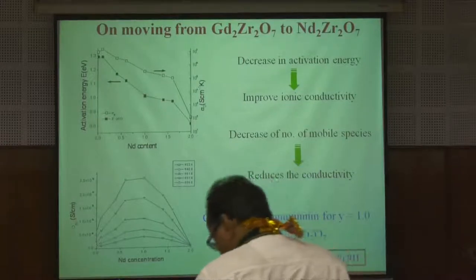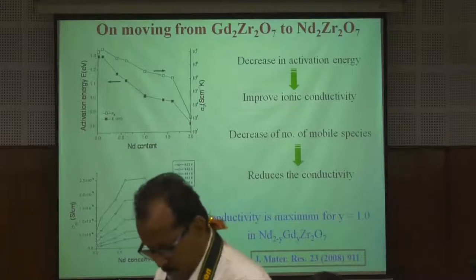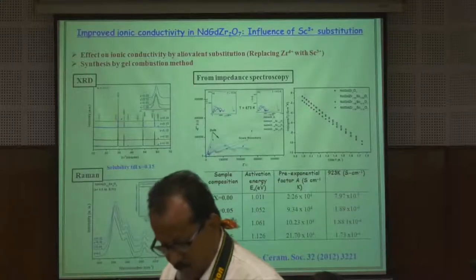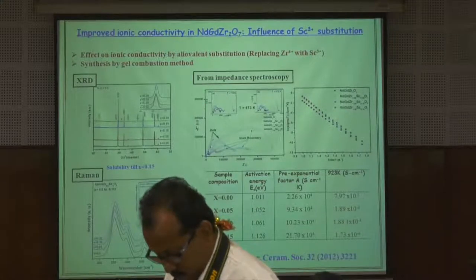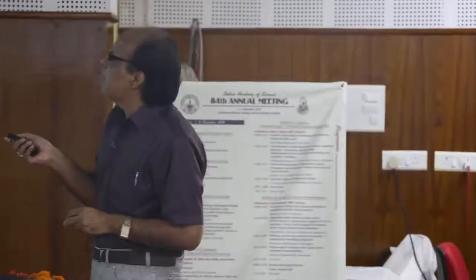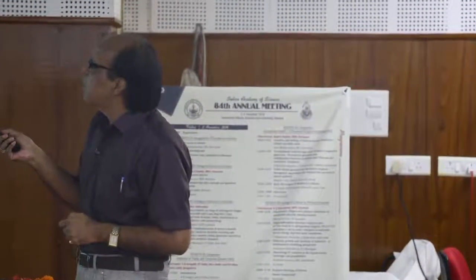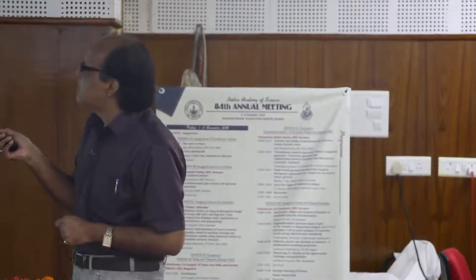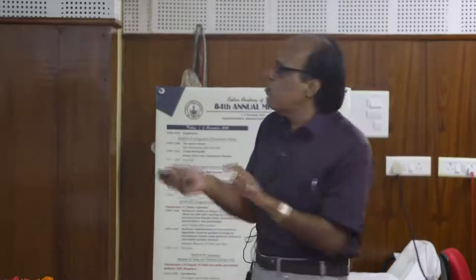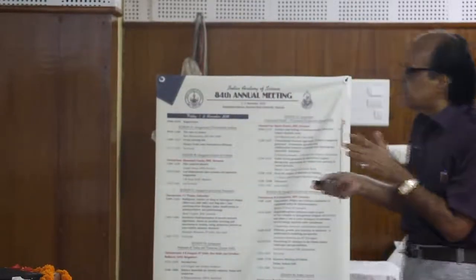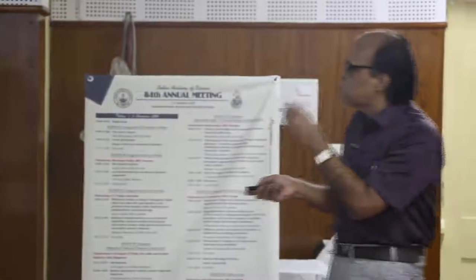After finding the compound with the highest ionic conductivity in the series, the next step is to introduce point defects. We replace zirconium by trivalent scandium — because the ionic size of Zr4+ and Sc3+ is exactly the same, so we don't change the RA/RB ratio or the degree of disorder, but we do introduce point defects. This gave us somewhat higher ionic conductivity — about one order of magnitude improvement.